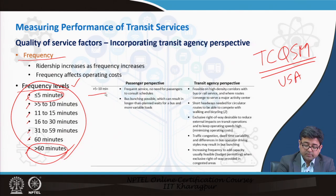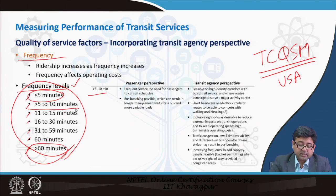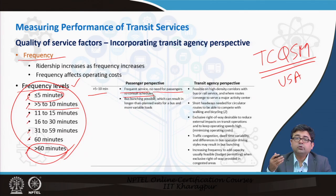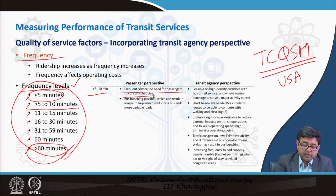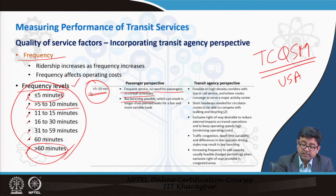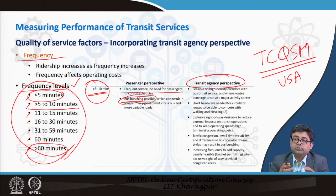The frequency ranges are divided into 7 levels, from a very high frequency of less than 5 minutes to a very low frequency of greater than 60 minutes or only one vehicle per hour. For example, when frequency is between 5 to 10 minutes, that means frequent service — no need for passengers to consult schedules; they can just come to a stop and get the next vehicle quickly. However, bus bunching is possible at such high frequencies — this is where 2 or 3 buses come very close together or their schedules merge.